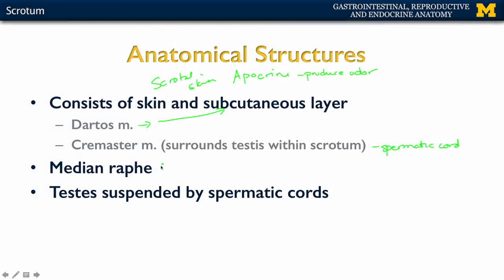One other thing we want to note within the scrotum, down the medial portion, is what's referred to as the median raphe. This is going to be almost completely avascular, so in terms of any type of incision that needs to be made in the scrotum, this is often an area where you can safely avoid any type of vascular supply. As we discussed with the testes, the testes are going to be suspended by the spermatic cords, and those spermatic cords are also located within the scrotum.